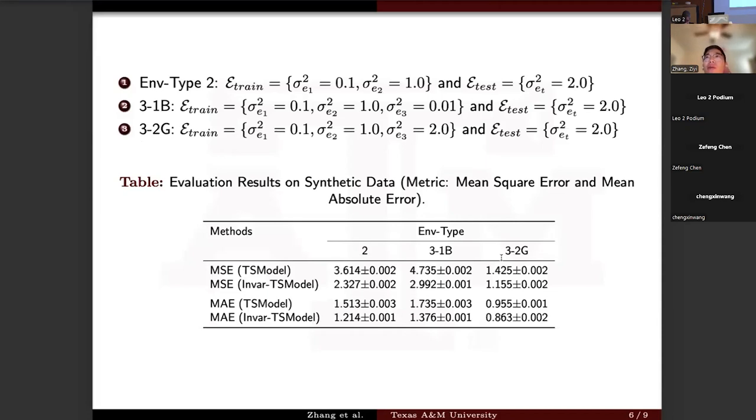Then we will discuss some empirical results from our experiments. We firstly performed our method on simulated data. We created three settings. For the first setting, there are two training environments. The data is generated when sigma is 0.1 and sigma is 1. We use the same test environment in these three settings, which is convenient for comparison of our model.